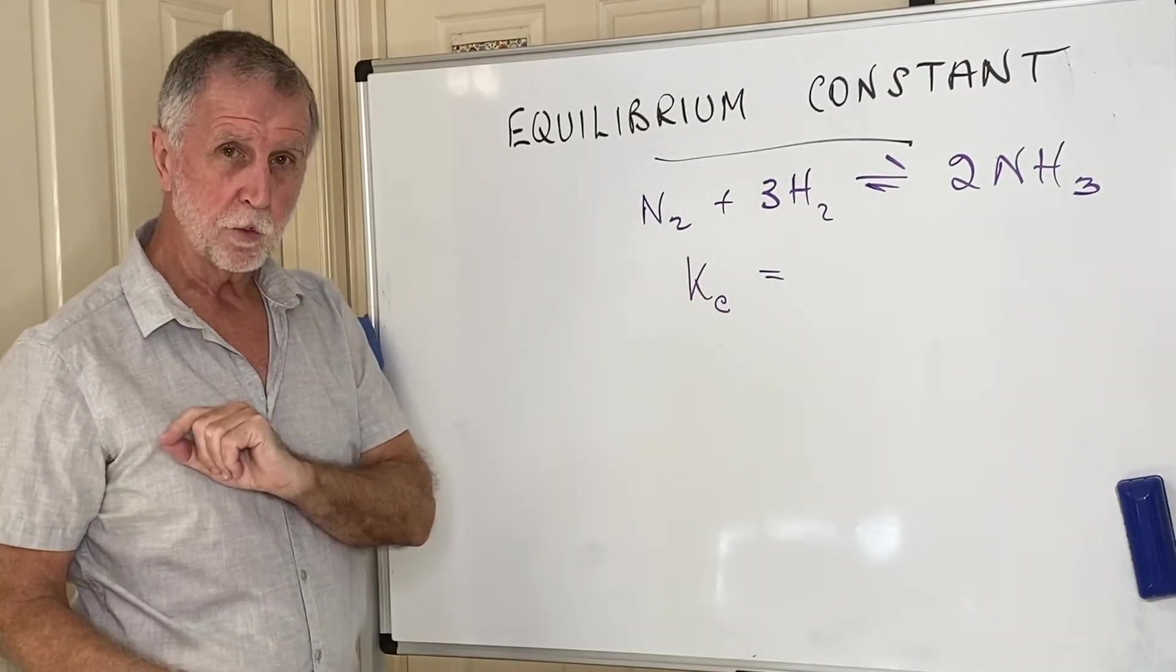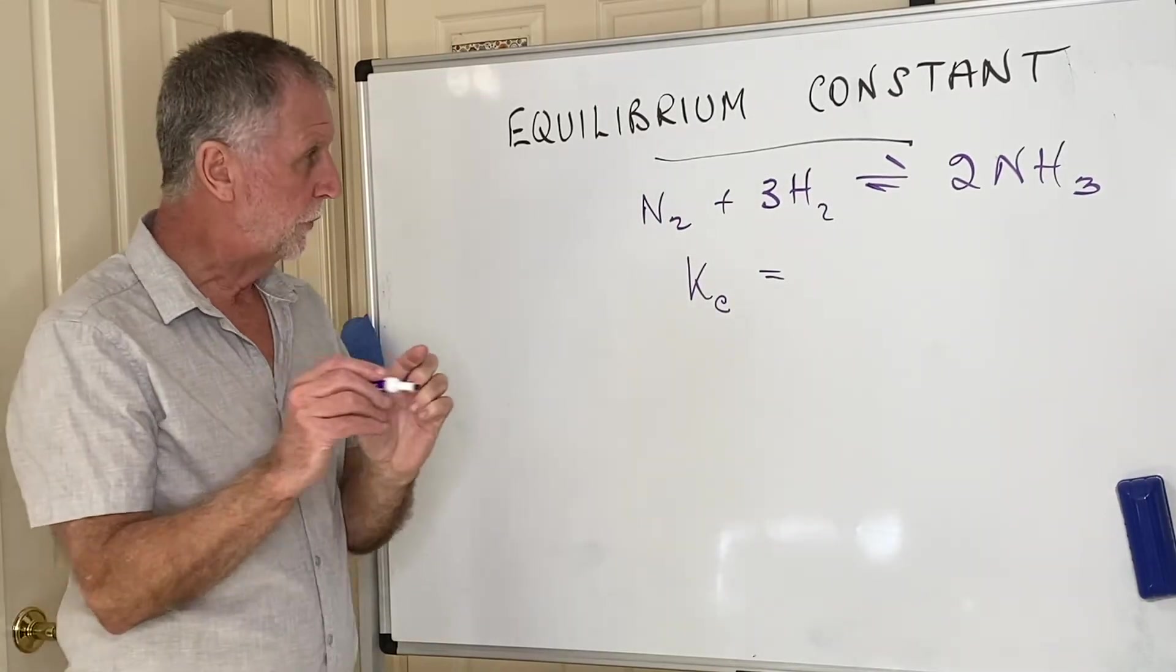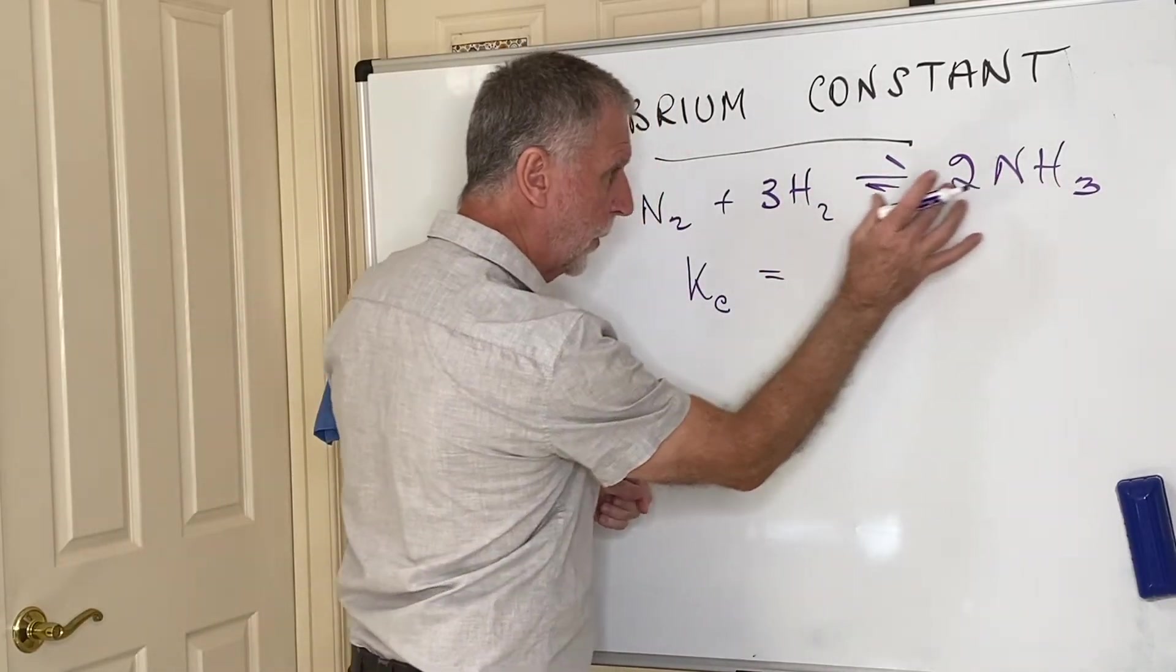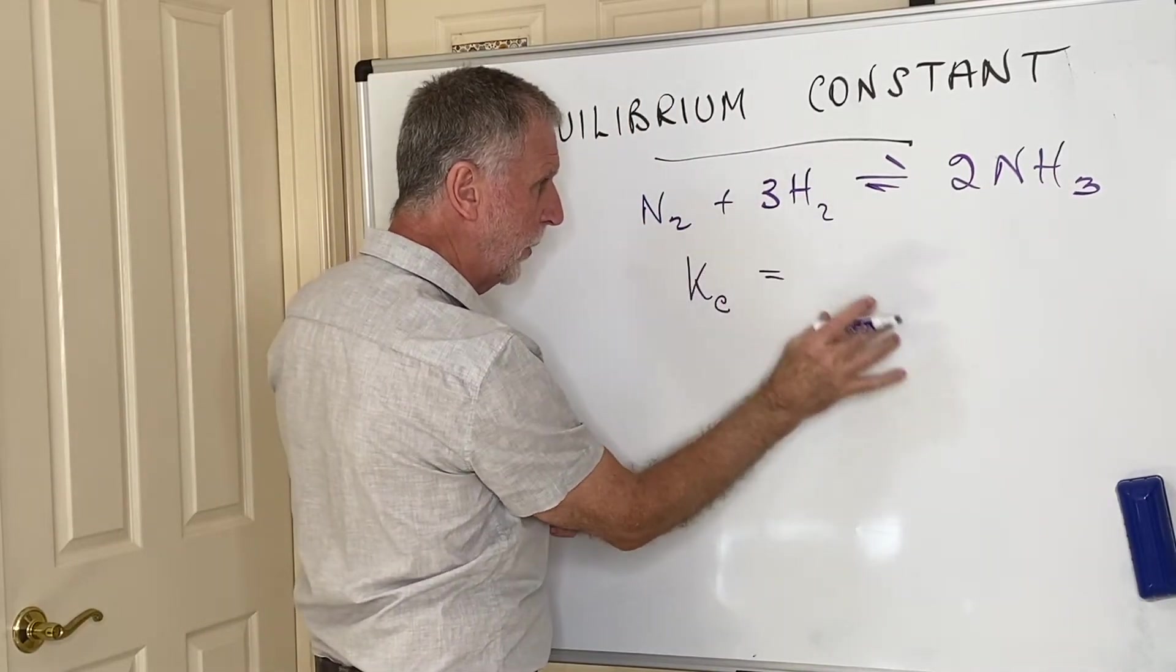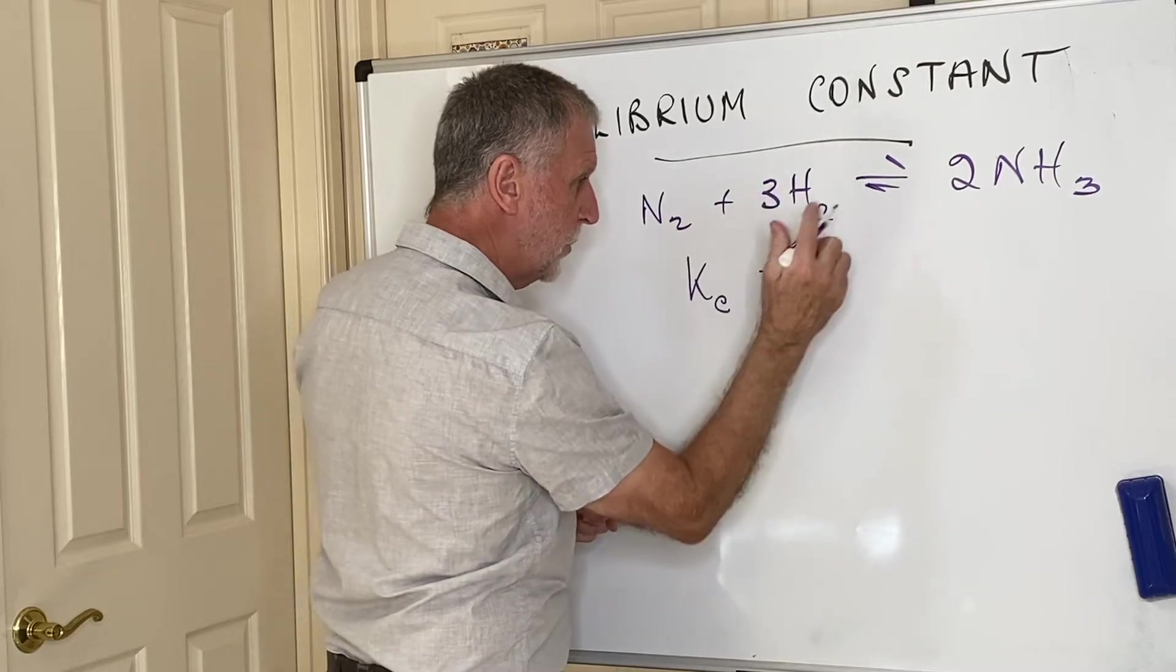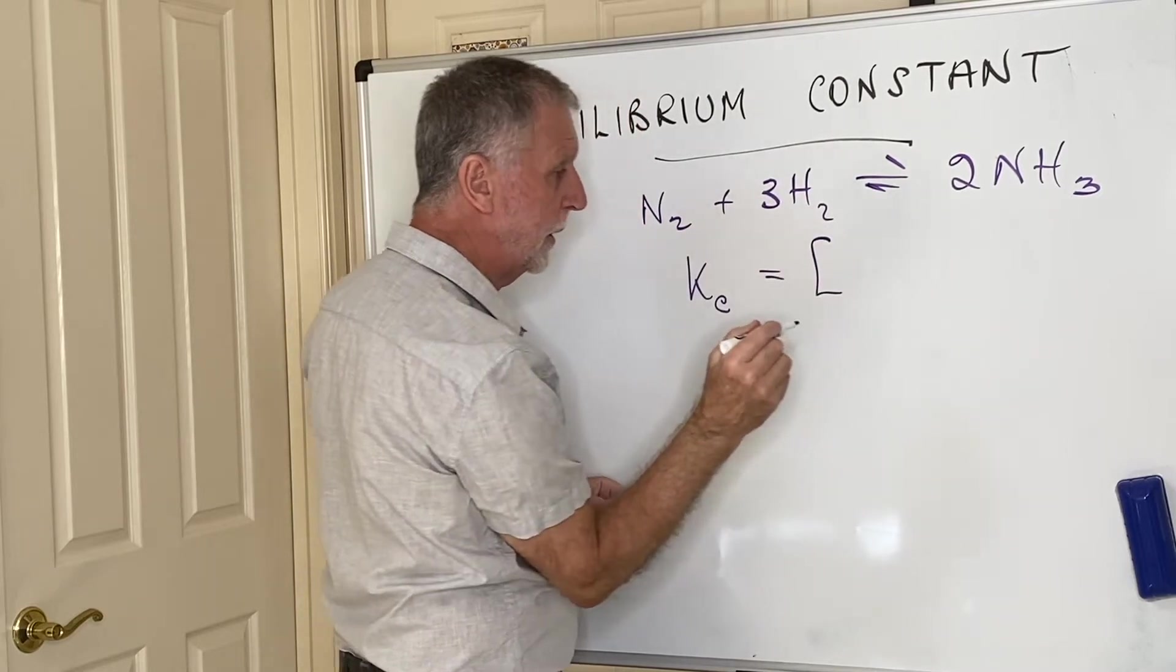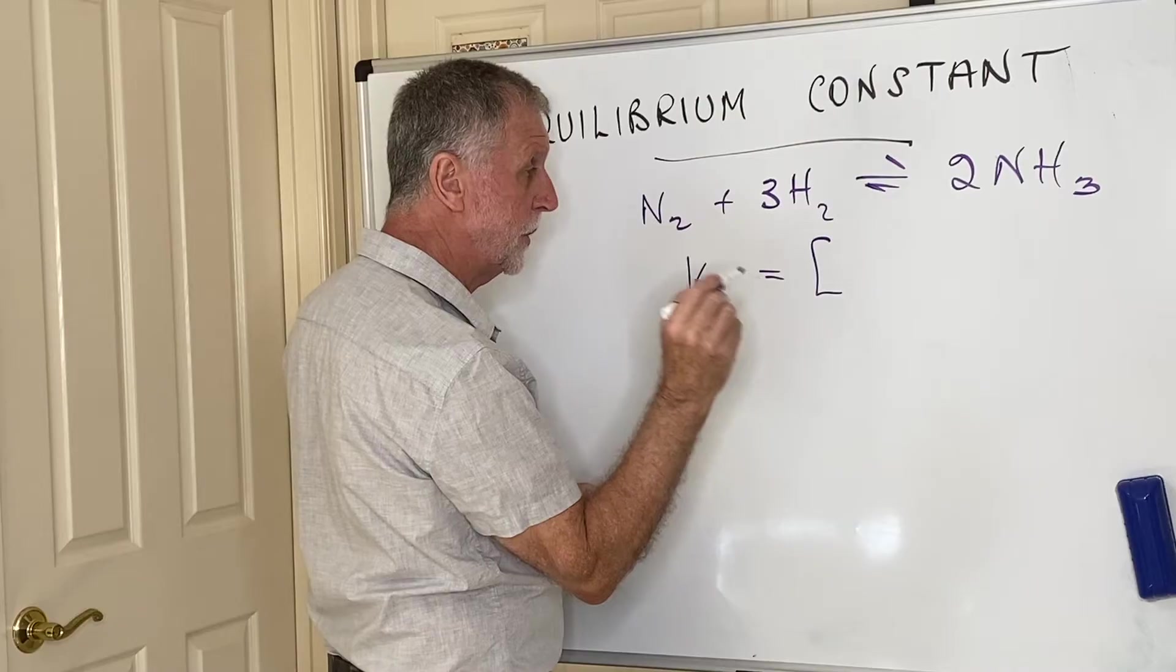By convention we put products on the top of the expression and reactants on the bottom. Concentration in chemistry in moles per liter is expressed using the square brackets.